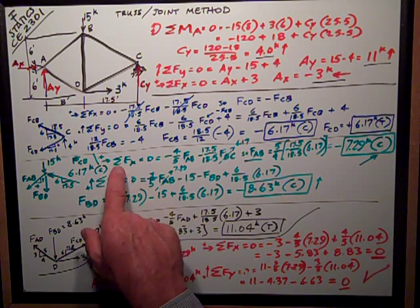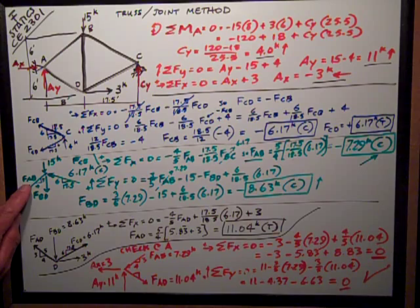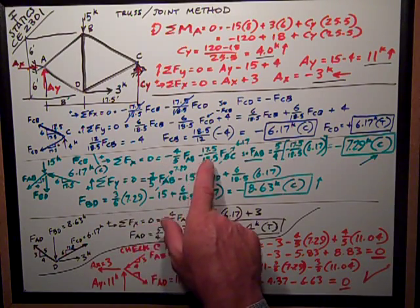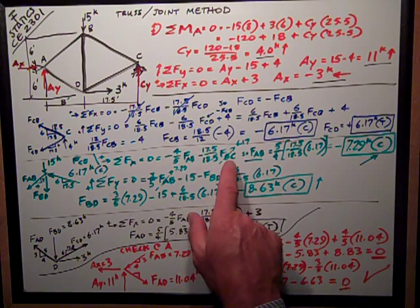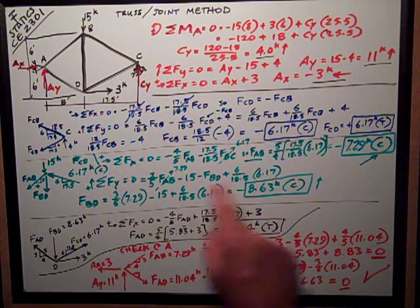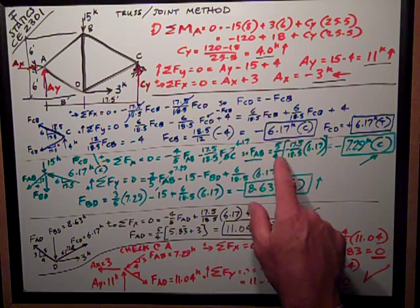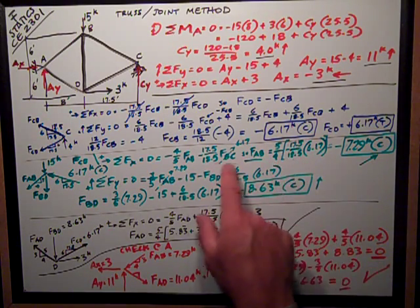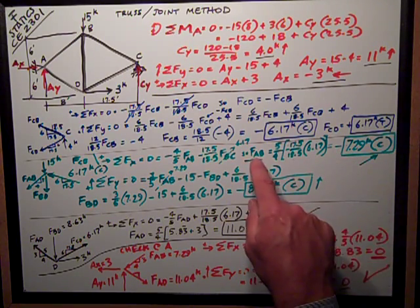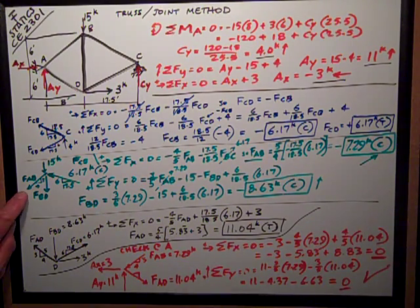The first thing I want to do is sum forces in the X direction. Positive to the right is equal to zero. Starting on the left side of my joint, I look at negative 4 fifths, which is the X component, horizontal component of FAB, to the left, so it's negative, minus 17.5 over 18.5, the force in BC, which is that known 6.17. That's all I have in the X direction. So I can solve for FAB, moving it to the other side of the equal sign. Doing all the math, I get FAB is equal to 5 fourths times negative 17.5 over 18.5 times 6.17, the force in BC. So I get a negative sign for FAB. It's negative 7.29 kips, so the negative makes it compression, opposite of what I assumed.